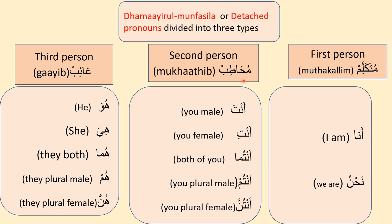Next is second person. Second person refers to the speaker's audience — it is a statement about the people you are talking to. Arabic second person pronouns are: Anta meaning you for male, Anti meaning you for female, Antuma meaning both of you for male and female, Antum meaning you plural for male, and Antunna meaning you plural for female.